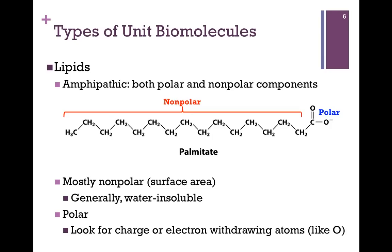You'll notice it contains a polar region on the far right, composed of a carboxylate group, and a non-polar region, outlined in red, that is a long hydrocarbon chain. Though it has both polar and non-polar regions, according to surface area it is mostly non-polar. For this reason, it is very hydrophobic — that is, water insoluble — as we'll learn more particularly in Chapter 2.